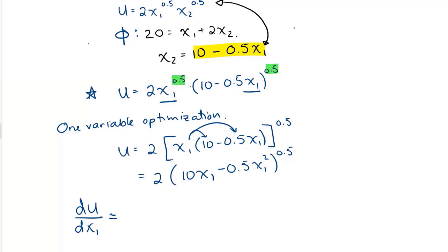Using the chain rule, this is U to the power of 0.5. I'm going to call this V instead. So I'm going to have 2 times the derivative there. So that's going to be 0.5 times V to the power of negative 0.5, where V is really 10 X1 minus 0.5 X1 squared, times the derivative of everything on the inside. So that's going to be 10 minus 0.5 times 2, which will be 1 X1.